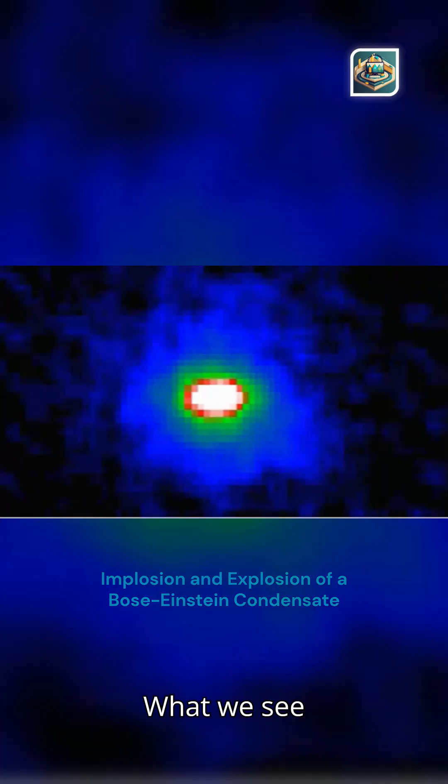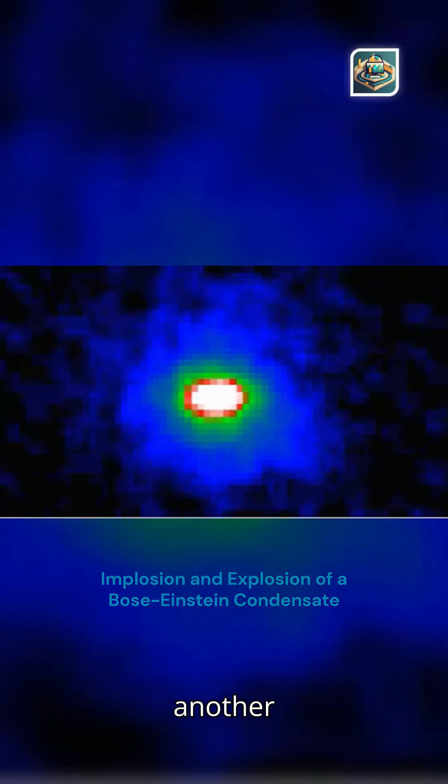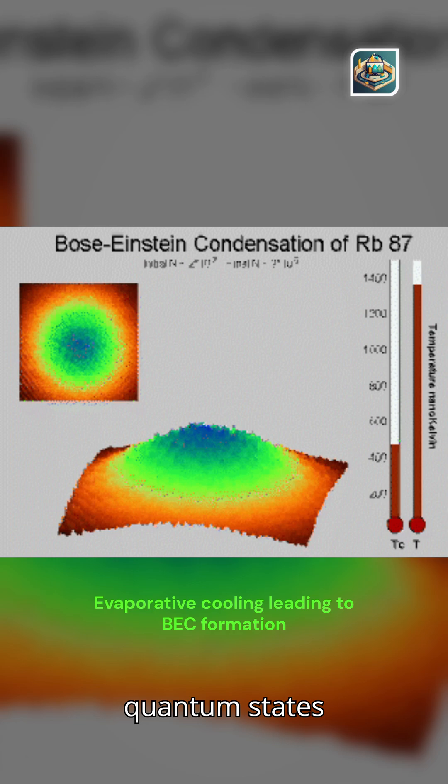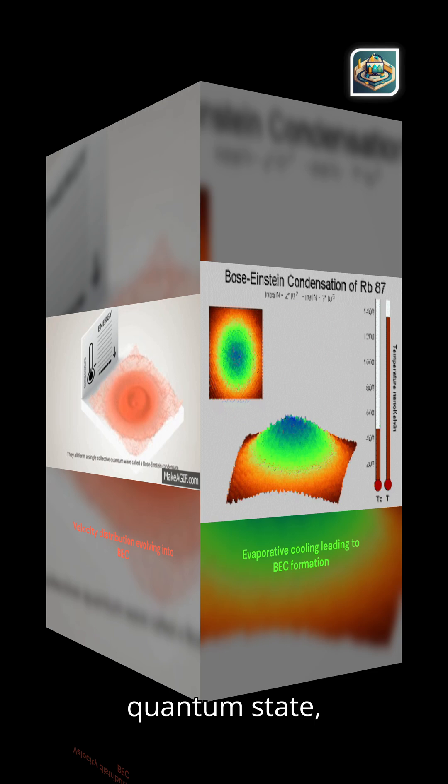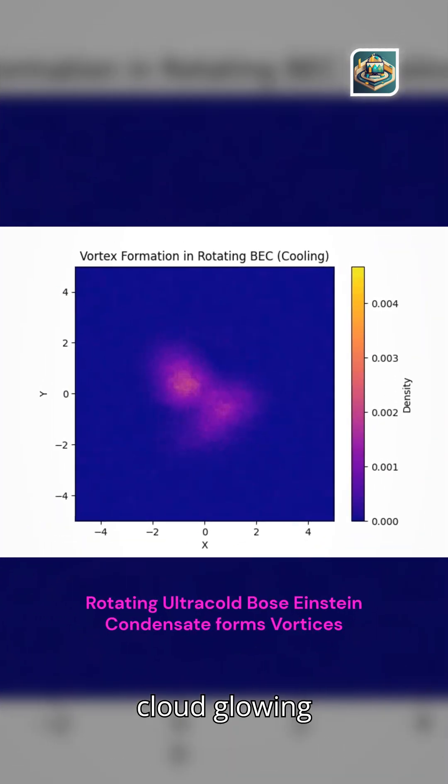What we see with Bose-Einstein condensates. The Bose-Einstein condensate is another striking example of quantum states we can actually see. Thousands of atoms collapse into a single quantum state, behaving like one giant superatom. You can literally photograph this quantum cloud glowing in the lab.